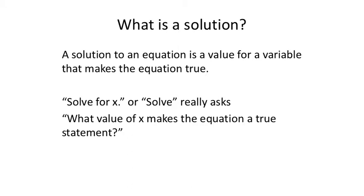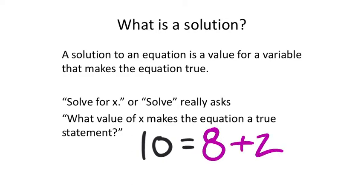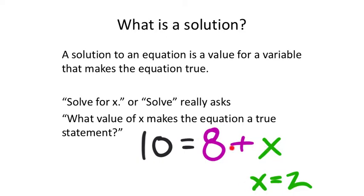We saw an example requiring distribution and combining like terms in the first lesson of this unit. Remember that a solution is a value you can replace the letter with to make a true statement. If we saw something like 10 equals 10, that's already true — that's what equal signs tell us. If it's false, we identify it as false. Something like 8 plus 2 would be true, but if we replace the 2 with a letter, we need to find what value makes it true. X being 2 would be the solution.